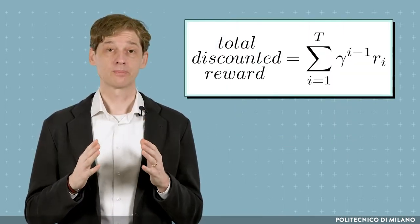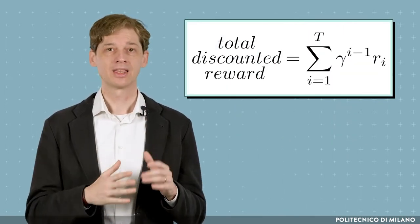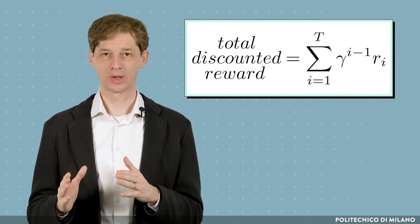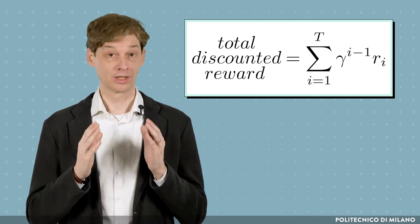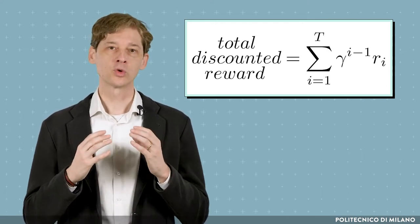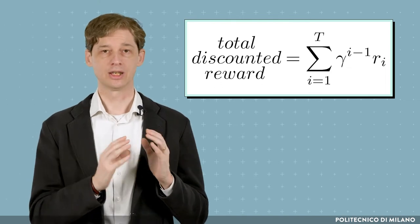In the summation, the reward at time i is multiplied by the discount factor raised to the power of i-1. The value of the discount factor, which needs to be in the range 0-1, specifies how much future rewards are relevant for the agent.